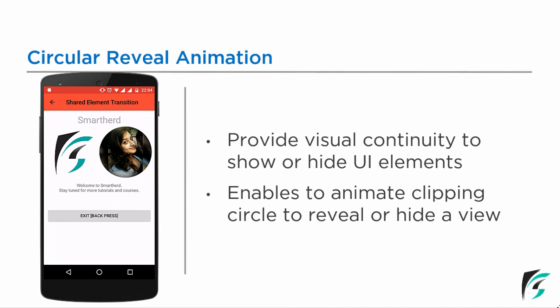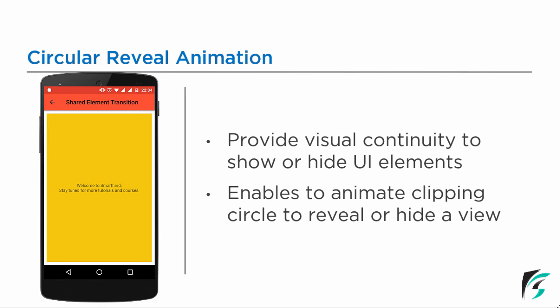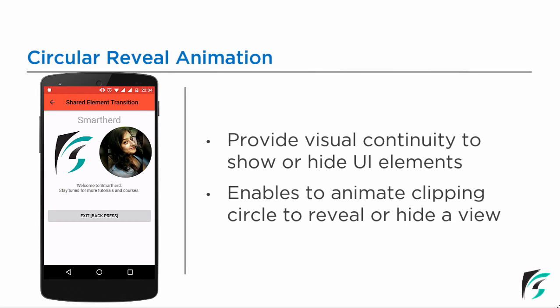This clearly demonstrates the name as circular reveal animation. The UI elements are hidden and a new UI element is shown. And on clicking it again, it is again invisible and the previous ones are displayed. This way, it provides visual continuity to show or hide the UI elements.